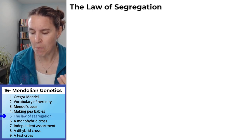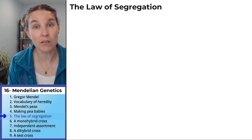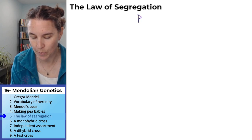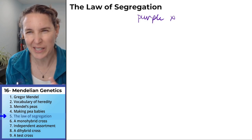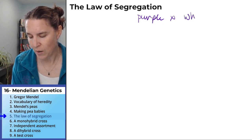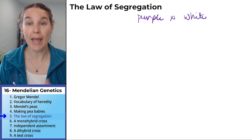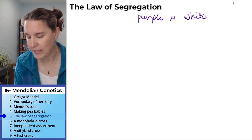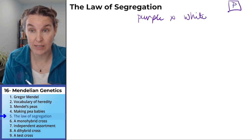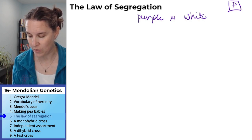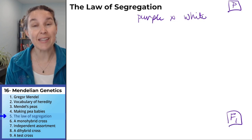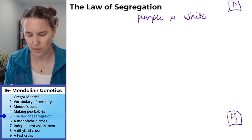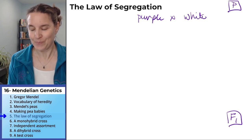We can be methodical about our crosses and see this in action. We're going to model the flower color cross that Mendel did. He started with a true-breeding purple-flowered plant, crossed it with a true-breeding white-flowered plant, counted the offspring — this is the P generation — and from that he got an F1 generation. I'm going to show you how we can figure out what that F1 generation actually looks like.